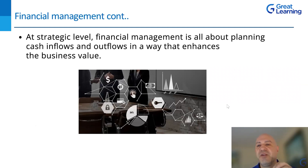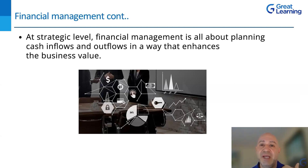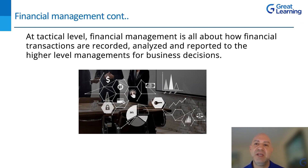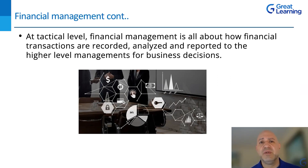At a strategic level, financial management is all about managing cash inflows and outflows in a way that enhances business value. If you make money as a business, you're taking money in — but you also have to take money out. You have to constantly manage the inflows and outflows to make sure you're operating at a net positive. At a tactical level, financial management is about how financial transactions are recorded, analyzed, and reported to higher-level management for business decisions. Front-line individuals in operations roles take care of day-to-day management, but all the reporting and outcomes get fed up to management so they can make short-term and long-term decisions.